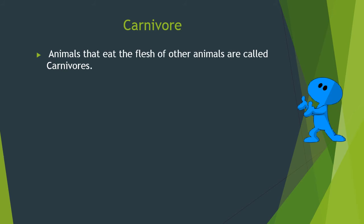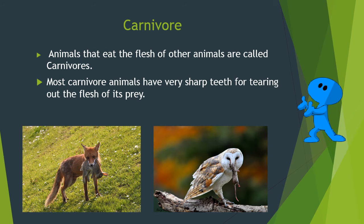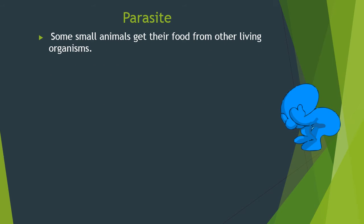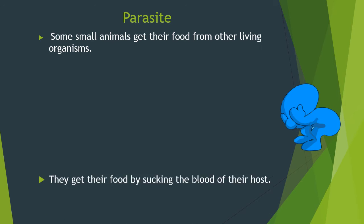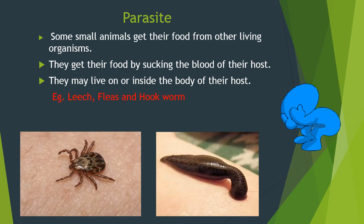Carnivores are animals that eat the flesh of other animals. Most carnivore animals have very sharp teeth for tearing out the flesh of their prey. For example: tiger, fox, and owl. Parasites are small animals that get their food from other living organisms. They get their food by sucking the blood of their host. They may live on or inside the body of their host. For example: leech, flea, and hookworm.